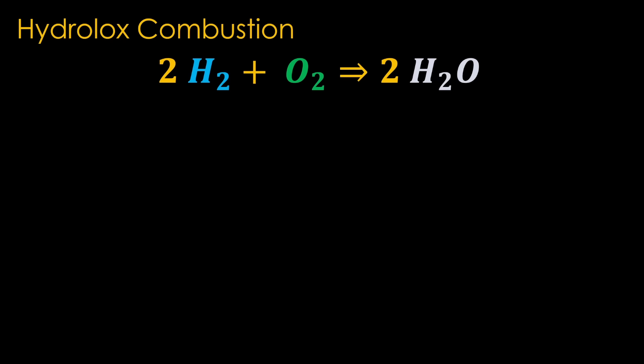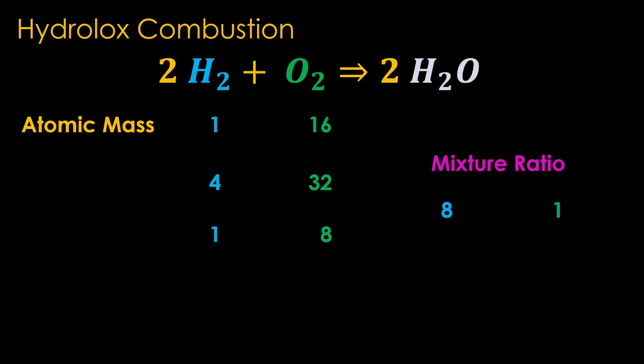This is a balanced equation — the amount of mass going in equals the amount of mass coming out. In rocketry, we look at this from the perspective of mass rather than the number of atoms. The atomic mass of hydrogen is close to 1 and oxygen is close to 16. Multiplying by the number of atoms gives us 4 for hydrogen and 32 for oxygen, which simplifies to a ratio of 1 to 8. In rocketry, we call this the mixture ratio and always write it with the oxygen amount first. For hydrolox engines, the complete combustion ratio — the stoichiometric ratio — is 8 parts oxygen to 1 part hydrogen by mass.